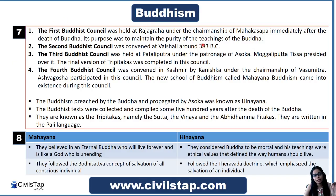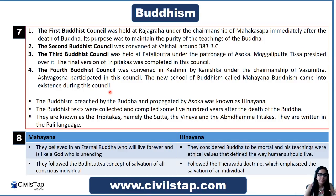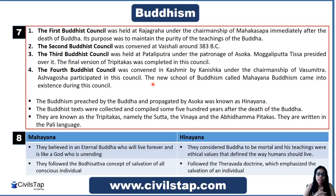The Second Buddhist Council was held at Vaishali around 383 BC. The Third Buddhist Council was held at Pataliputra under the patronage of Emperor Ashoka of the Maurya Empire, with Moggaliputta Tissa as president. In this council, the Three Pitakas — containing the final version of Buddha's teachings — were completed. The Fourth Buddhist Council was held in Kashmir under the patronage of Kanishka, with Vasumitra as chairman. Ashvaghosa also participated, and in this council a new school called Mahayana Buddhism evolved.